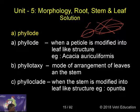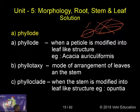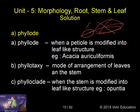Phyllotaxy refers to the mode of arrangement of leaves on the stem. Phylloclade is when the stem is modified into a leaf-like structure. The difference: in phyllode, the petiole is modified into a leaf-like structure; in phylloclade, the stem is modified into a leaf-like structure. Example of phylloclade: Opuntia.